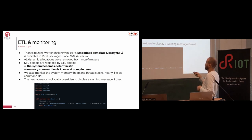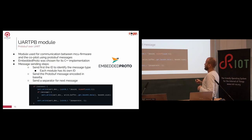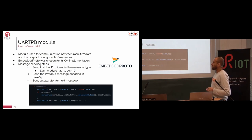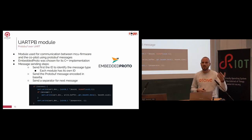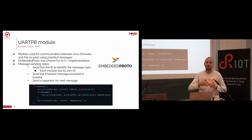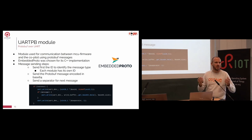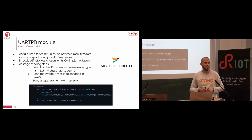We also overrode the 'new' operator to display a warning message in case it is called again. About the UART Protobuf module we developed based on Embedded Proto: it's simple — a protobuf module used over UART to send messages. We use Embedded Proto for each C++ implementation. The sending steps are: we send an ID for each module, the received message has the ID so we know the correct callback to call, and we send the protobuf message encoded in Base64, allowing any kind of message to be sent easily at the cost of a small overhead, plus a separator to avoid message collision.